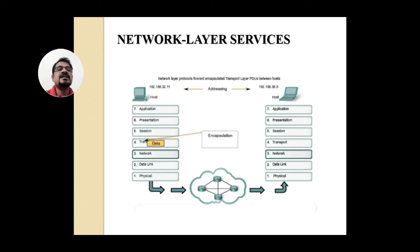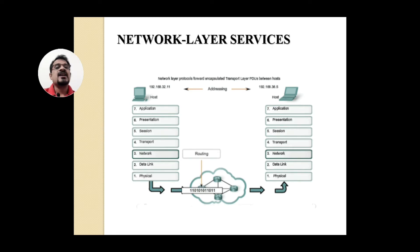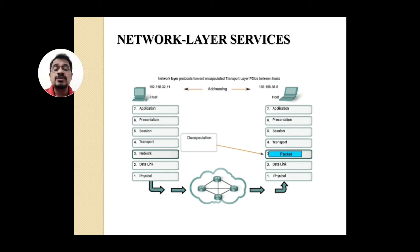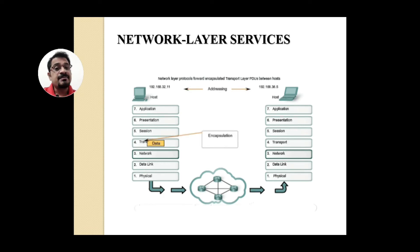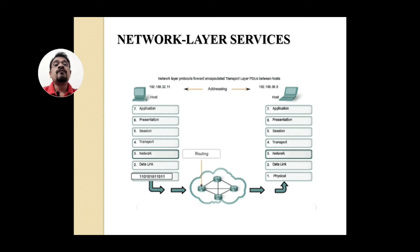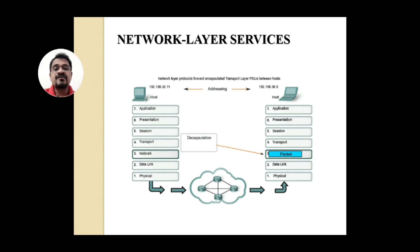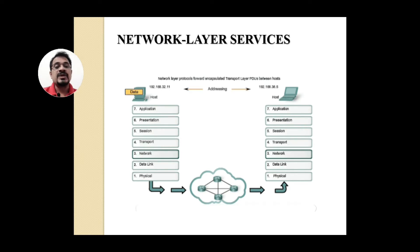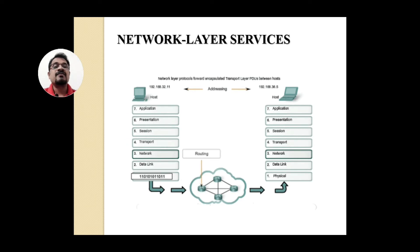In this diagram you can see how data flows from a source station to a destination station. From the source, data comes from the application layer and reaches the transport layer. The transport layer takes responsibility for process-to-process communication and assigns a sequence number for each package. That information is then moved into the network layer, whose main responsibility is to find the shortest path between the source and destination network. Whatever information comes from the transport layer is encapsulated with payload fields and then moved into the data link layer.